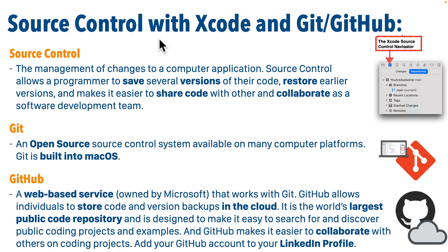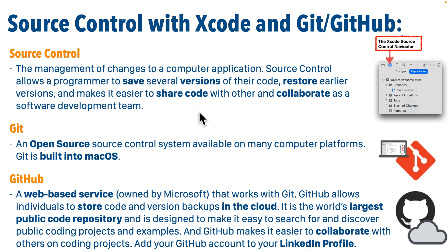Source control allows us to save copies of our software development projects. You'll want to do that for several reasons: to save versions over time to track what new features were added and what bugs were fixed, to revert back to an earlier version if a change created a bug or if you decided you didn't want to include a feature you were experimenting with. You'll use source control to share your code with others, and it's vital when working on projects as a member of a team.